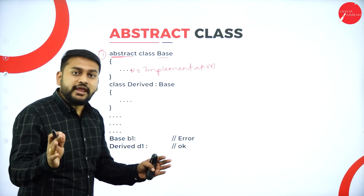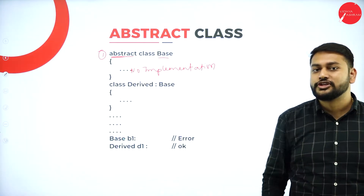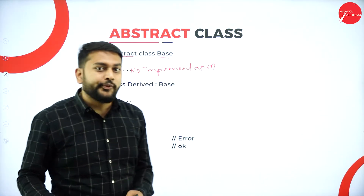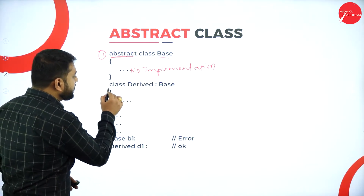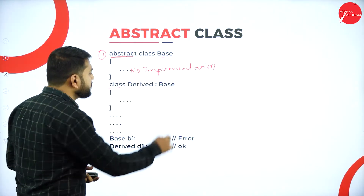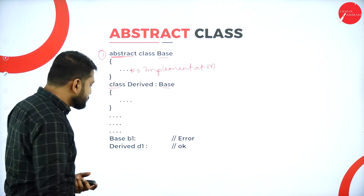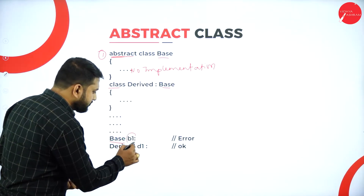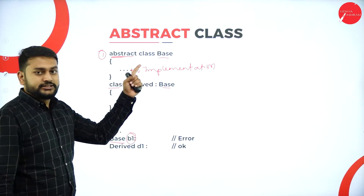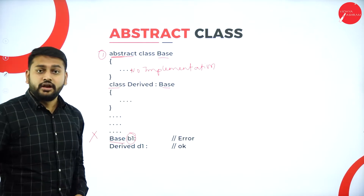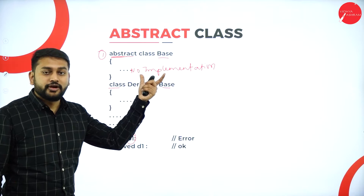The second point: you cannot create an object for an abstract class. Whenever you make any class abstract, you cannot instantiate it. I have taken an example here — I have a subclass using a base class as its superclass. When I try to create an object b1 for the base class, it gives an error: you cannot create the object for an abstract class.